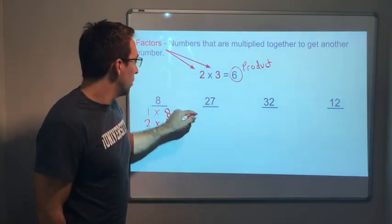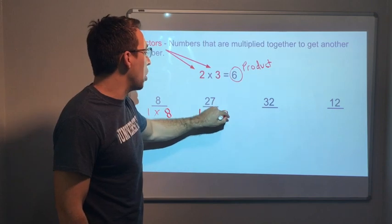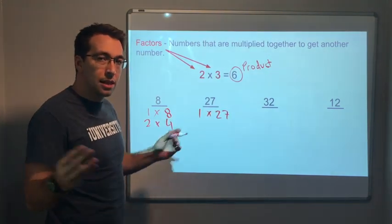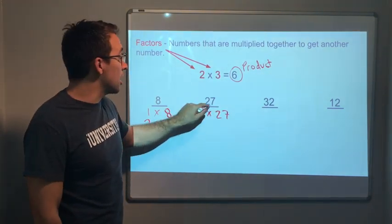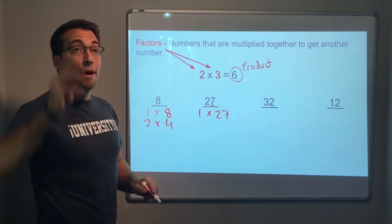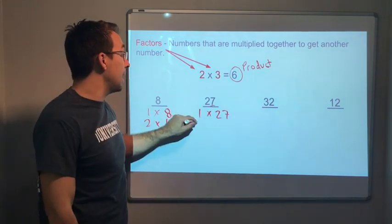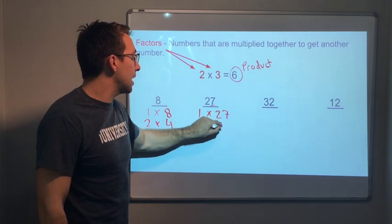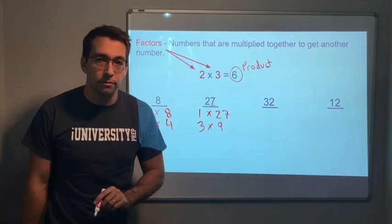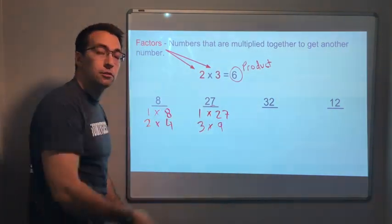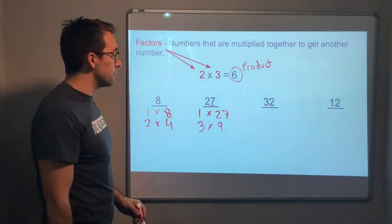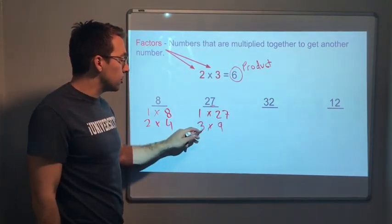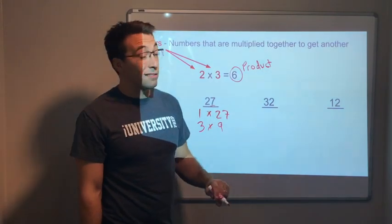What about 27? 1 times 27. Always, always start with 1, it's easy. 2? No, 2 doesn't do it. Look, that's an odd number. What about 3? 3? Yeah, 3 does. 3 times 9 is 27. Here are our factors for 27: 1, 27, 3, 9. 32 has got a lot.